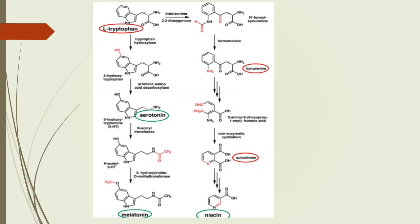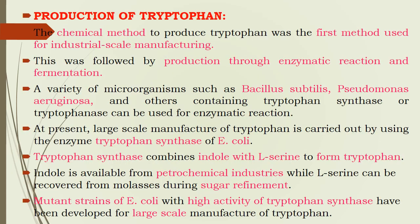Once tryptophan is produced, it undergoes many pathways — as mentioned previously — to produce neurotransmitters and hormones essential for humans and animals, including serotonin, melatonin, and niacin. It is also used in animal feeds. Moving on to production: initially the chemical method was used to manufacture tryptophan, but the quantity produced was very minimal for commercialization, so they moved to enzymatic reactions and fermentation processes.